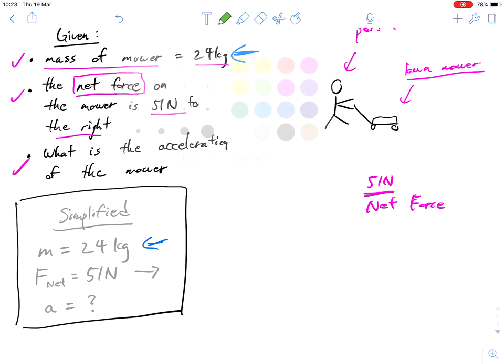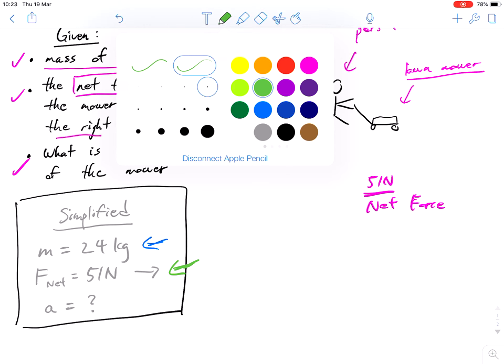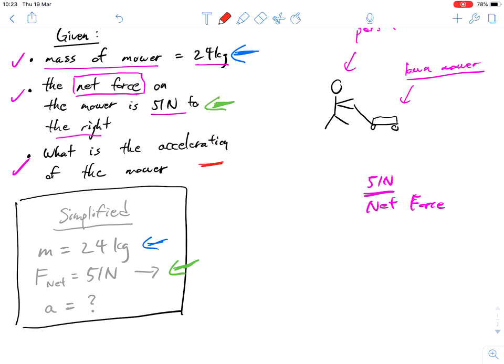And then we've got the net force is 51 Newtons to the right. And then we're asked to figure out what is the acceleration. So I like to use a question mark to help me represent that I'm trying to solve that.